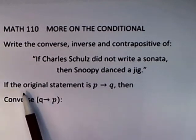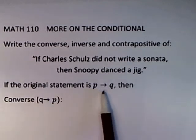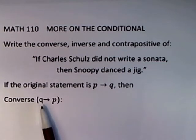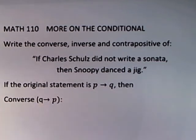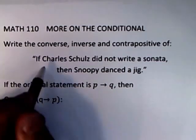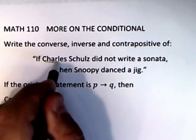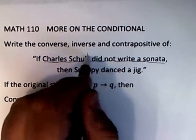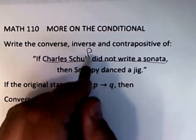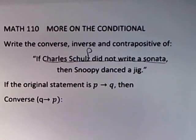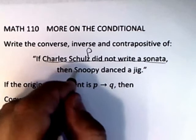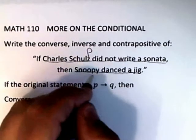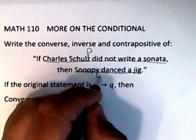We know that if an original statement is P implies Q, then the converse is written as Q implies P. So all we need to do here is to identify what is P and what is Q in this particular compound sentence. If we think of the statement 'Charles Schulz did not write a sonata' as P, and 'Snoopy danced a jig' as the statement Q,